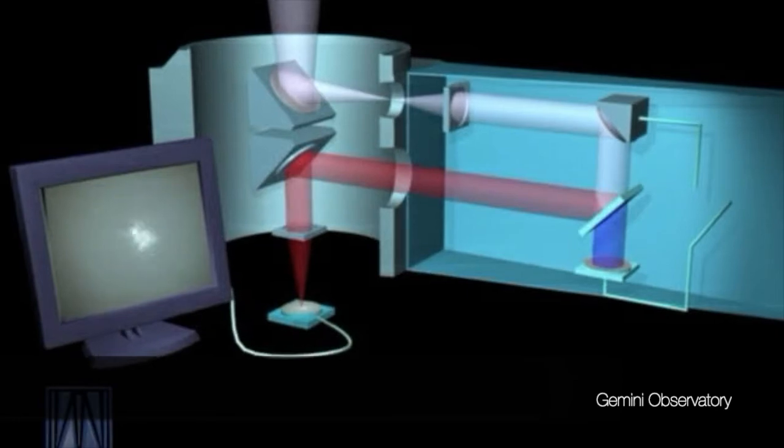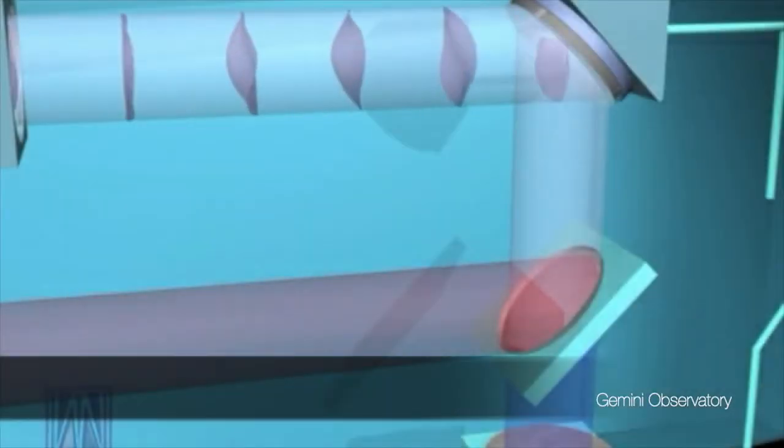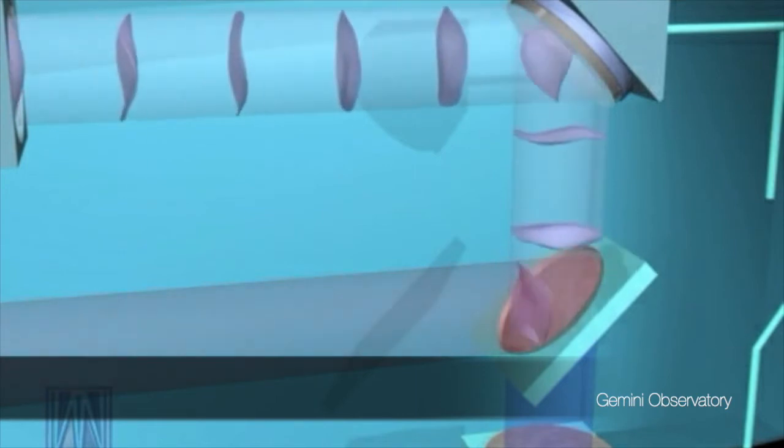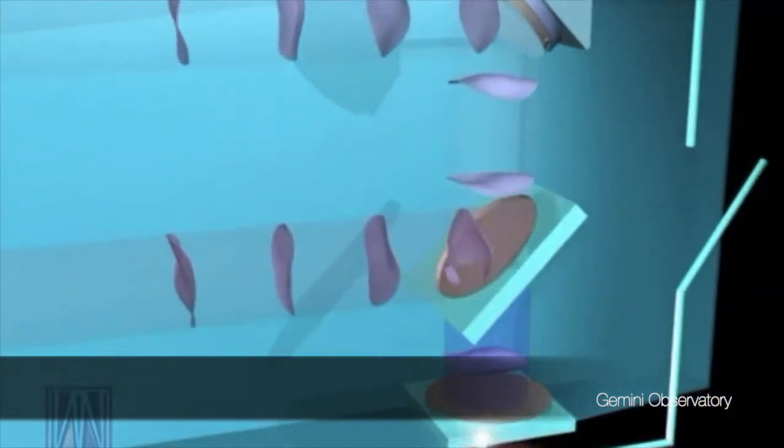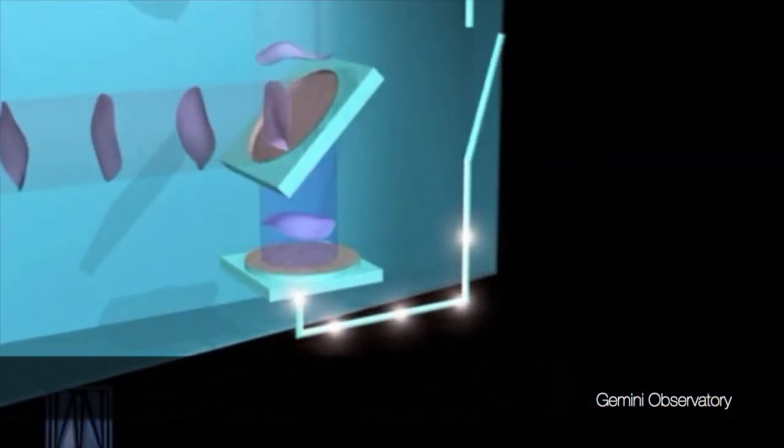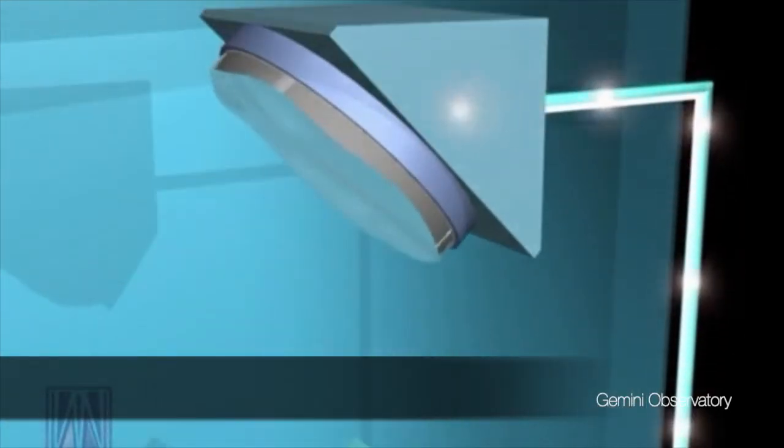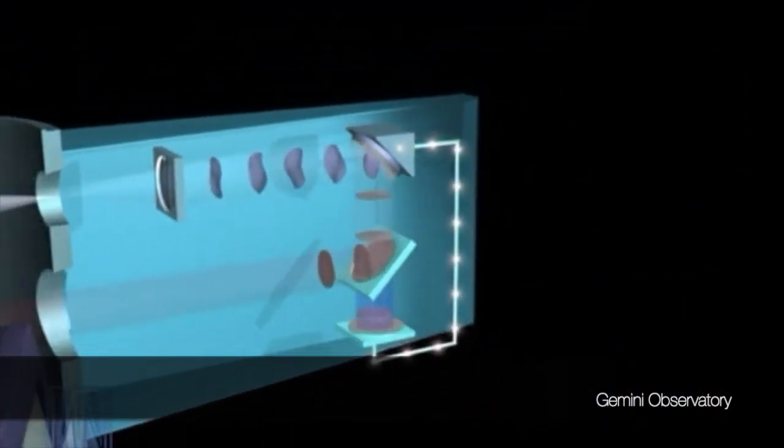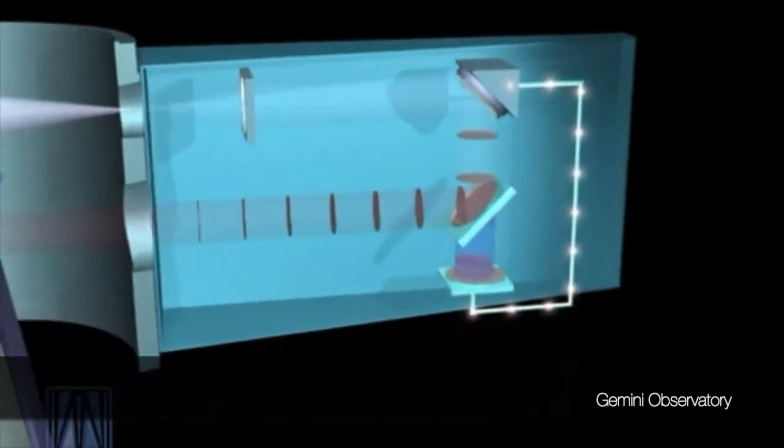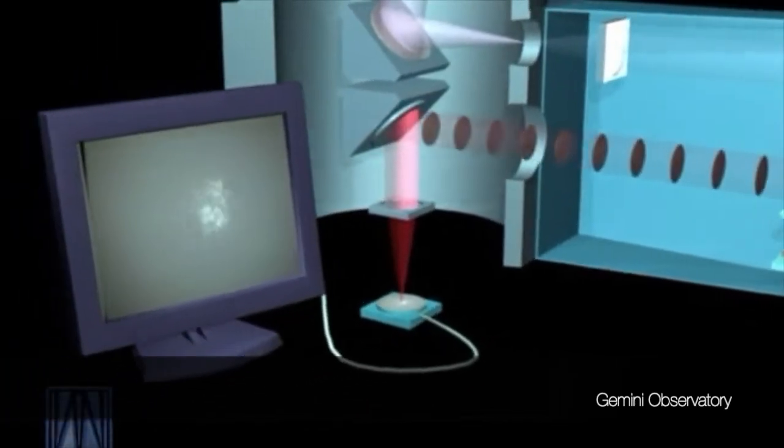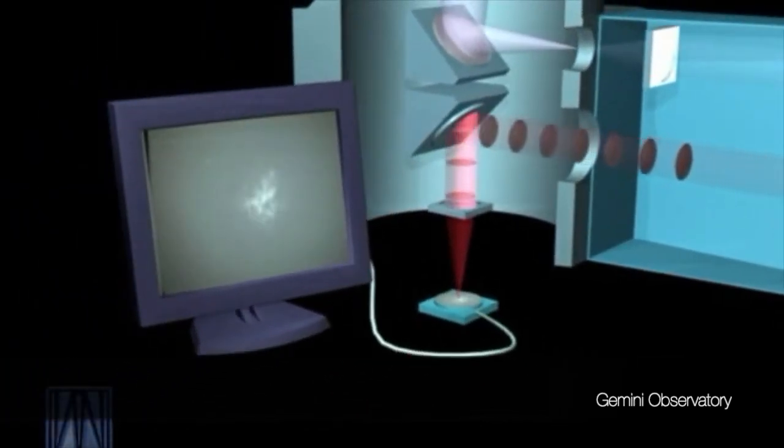Next we switch on the adaptive optics. The heart of it is a rapidly deformable mirror. This rubber mirror adjusts its shape dozens of times every second to exactly cancel out the blurriness of the incoming light. The correction is determined by rapid computer processing to make the blurred laser beam into a sharp point of light. Applying that same correction to the incoming light from stars also dramatically sharpens the observed images of all the stars in the picture.